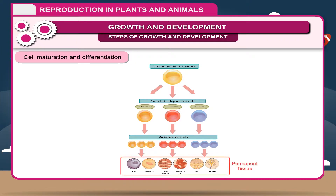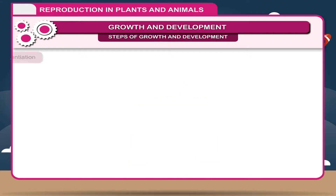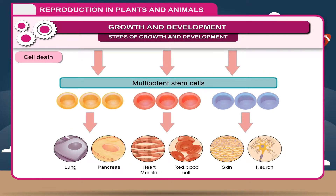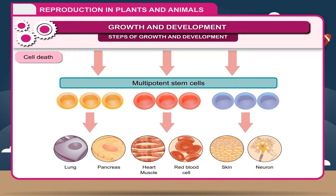After maturation and differentiation, these cells remain unchanged. Cell Death: After differentiation, each cell performs its own function and there is no further change. But in due course of time, these cells cease their activity and in place of these, new cells originate.